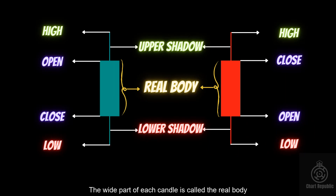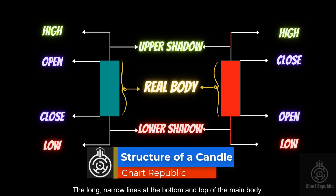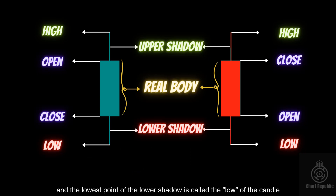The white part of each candle is called the real body, which represents the range between the opening and closing prices over a specific time period. The long, narrow lines at the bottom and top of the main body are called shadows, also known as tails and wicks. The highest point of the upper shadow is the high of the candle, and the lowest point of the lower shadow is called the low of the candle.